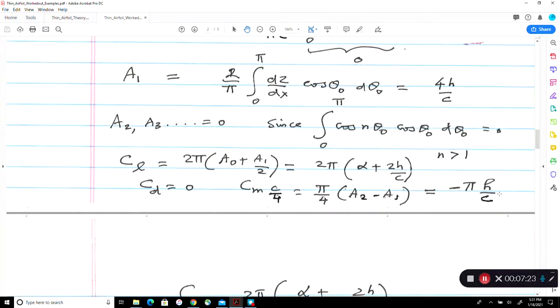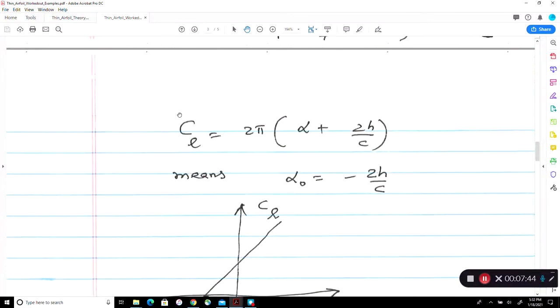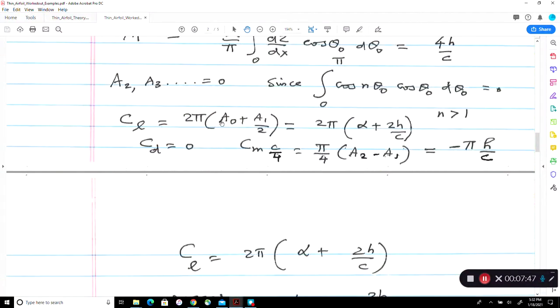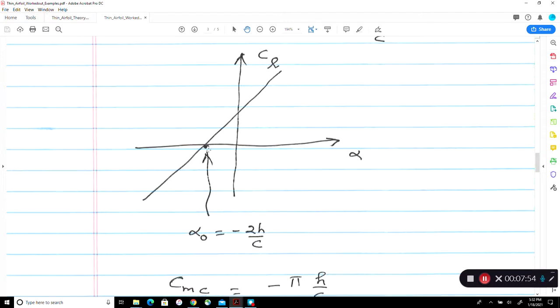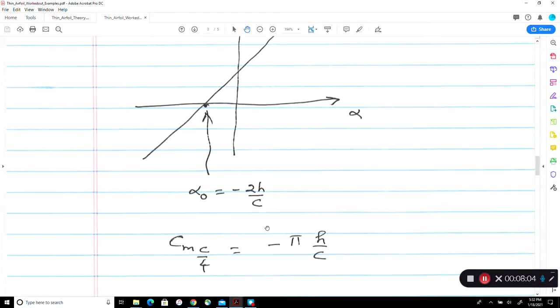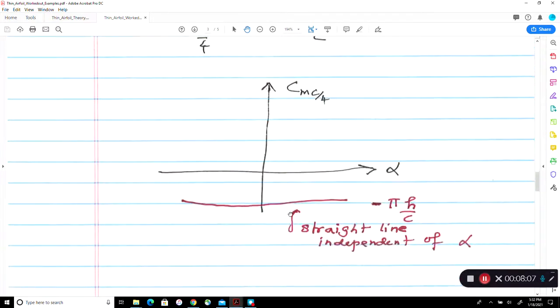So again, if you go to Abbott and Doinhoff book and look at some of the aerofoils, you'll find a large nose down pitching moment. Notice that this is independent of alpha. Therefore, the quarter chord point is the aerodynamic center because at that point, the camber pitching moment is independent of alpha. So this is the expression for Cl, A0 plus A1 over 2. So this is when alpha equal to minus 2h over c, you get Cl equal to 0. So this is the angle of zero lift. So we get a straight line, but the intercept is at alpha equal to alpha naught, which is minus of 2 times h over c. This is the pitching moment. So the pitching moment is a straight line, independent of alpha parallel to the x-axis.